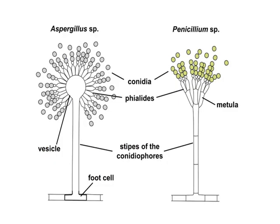Next we will try to understand the basic structure of a few important fungal organisms. As we can see in the picture, there are two important fungal organisms: one is Aspergillus species and the second one is Penicillium species. Both groups are important — for example, Aspergillus species find wide use in industrial applications like in the production of organic acids.